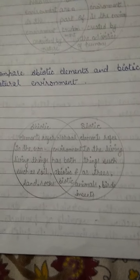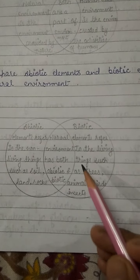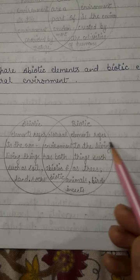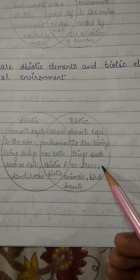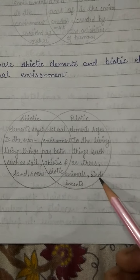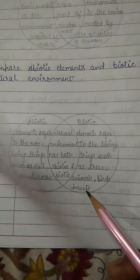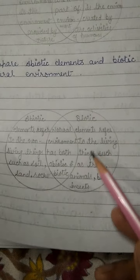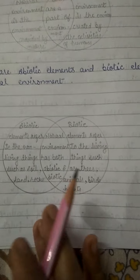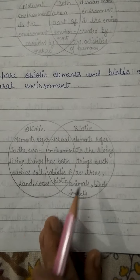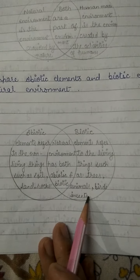Biotic elements refer to the living things, such as trees, animals, birds, and insects.